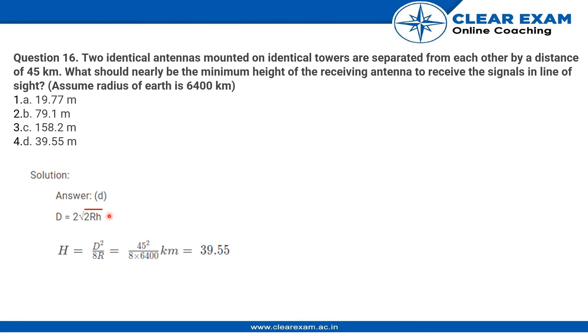we will square throughout. So we get D squared by 4, and dividing by 2R, we get H equals D squared by 8R as the height of the antenna.